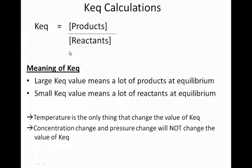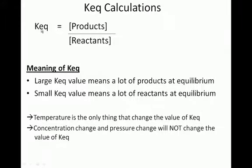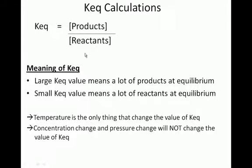Today we're going to be doing KEQ calculations and looking at equilibrium constants. What we learned last time is that the equilibrium constant is when you take the total concentration of all the products and multiply them together, and divide by the total concentration of all the reactants, and you get a constant that's not changing. Even if you add more products or more reactants, the system will reach new equilibriums, but the KEQ value will never change. The only thing that can change a KEQ value is temperature.